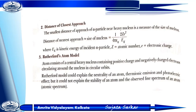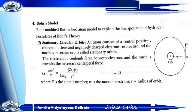My next topic is the Rutherford atomic model. The atom consists of a central heavy nucleus containing positive charge, and negatively charged electrons circulating around the nucleus in circular orbits. Rutherford's model could explain the neutrality of the atom and thermionic emission in the photoelectric effect, but it could not explain the stability of the atom or the atomic spectrum.